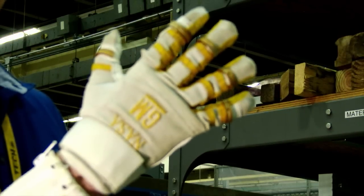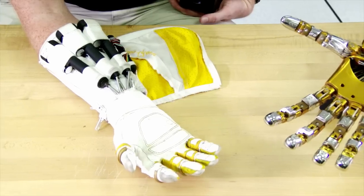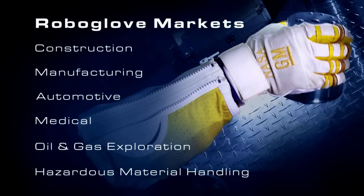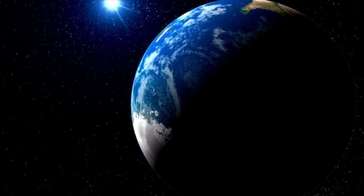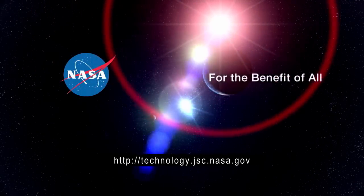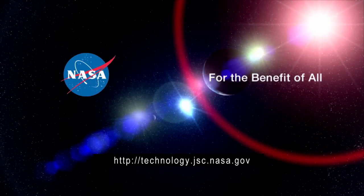The NASA GM RoboGlove is a patented technology available for use through a license agreement with NASA. RoboGlove can benefit a wide range of applications and uses that can be sold to a wide range of markets. To find out more about RoboGlove and other technology license opportunities, visit technology.jsc.nasa.gov.